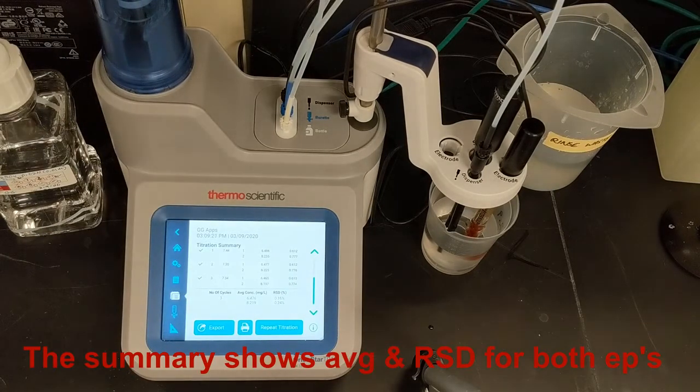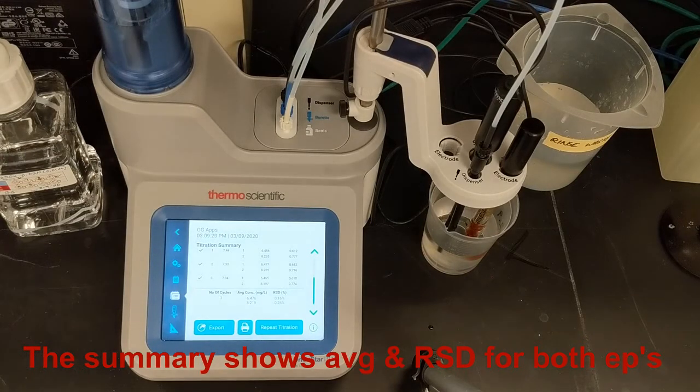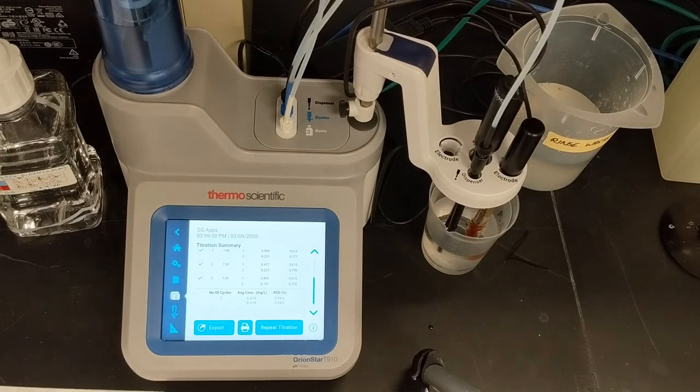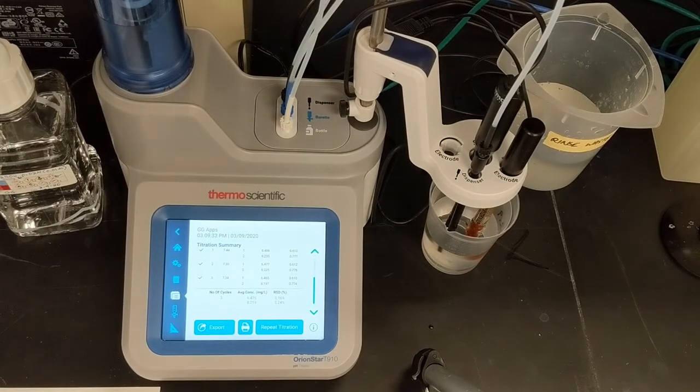The summary shows the average value and the percent RSD for both endpoints of the three cycles. Note that the percent RSDs are quite good, 0.16% for the first endpoint at pH 4.5 and 0.24% for the second endpoint at pH 4.2.